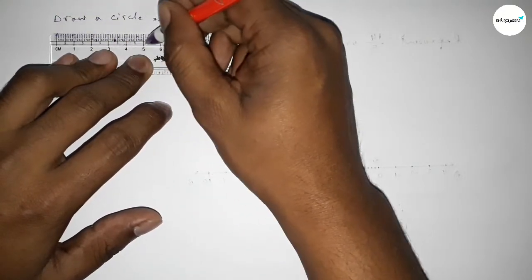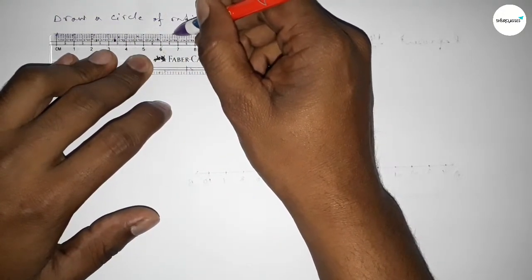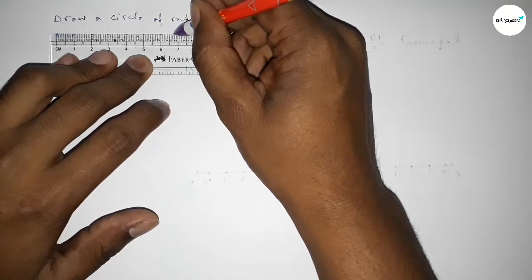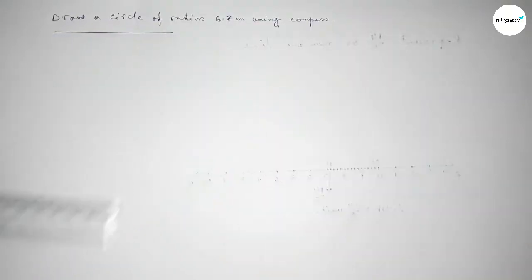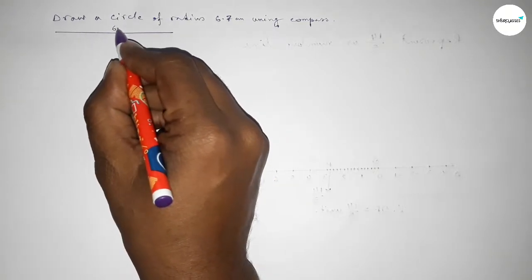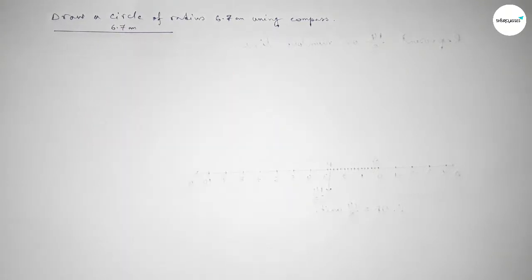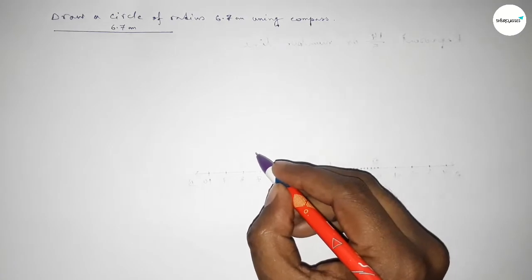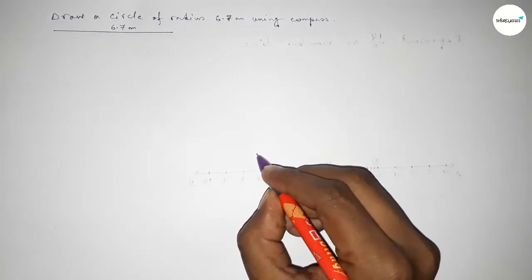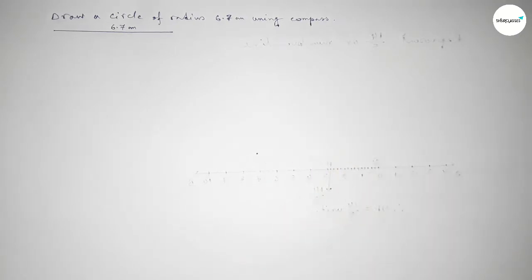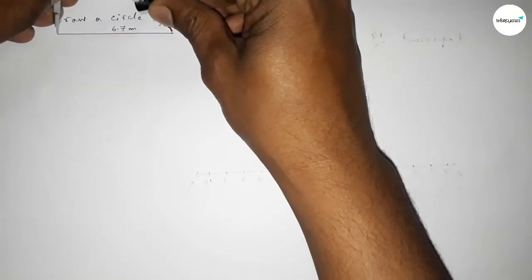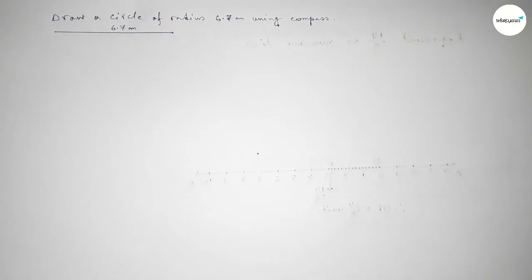Starting at 0, 1, 2, 3, 4, 5, 6, 6.5, 6.7. So this is 6.7 centimeters, this line is 6.7 centimeters. Now taking here a point. Next, taking the length 6.7 centimeters by using the compass.